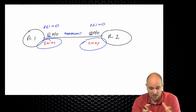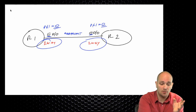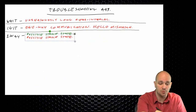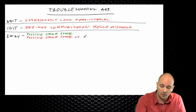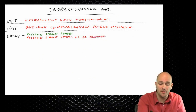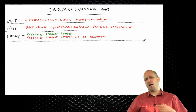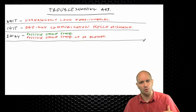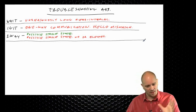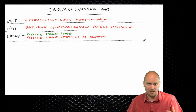One-way communication is the number one reason for routers being stuck in init. Another reason is hello mismatch — some parameters in the hello packets don't match. What needs to match is the hello timer, dead interval, area ID, area type, and subnet (though on point-to-point interfaces, subnet matching is less relevant).